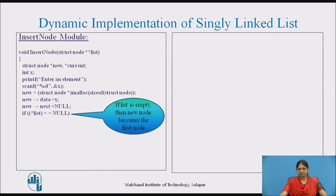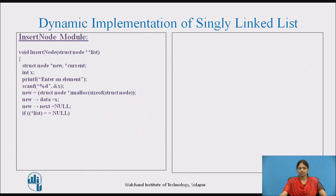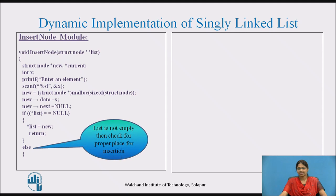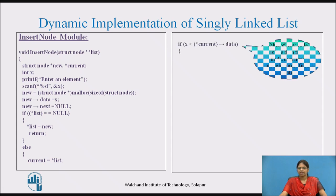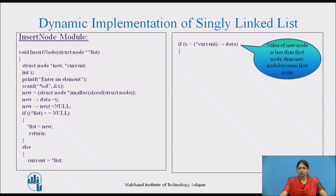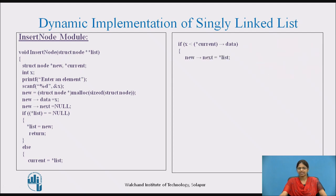First we check if the list is empty. If the list is empty, the new node becomes the first node, so list is assigned to new. Else, the list is not empty, and we check for the proper place for insertion. We initialize the pointer current pointing to the head node. If the value of the new node is less than the first node, new node becomes the first node — new->next is assigned to list and list is assigned to new.